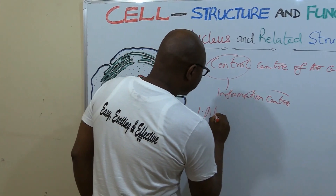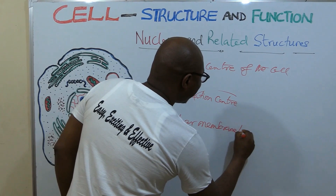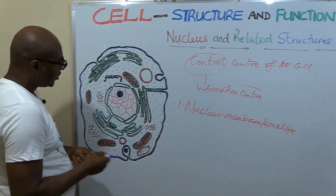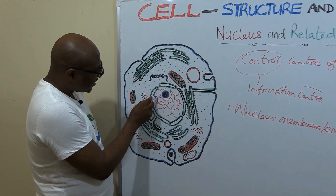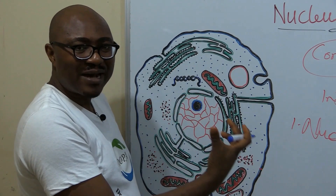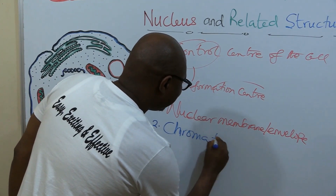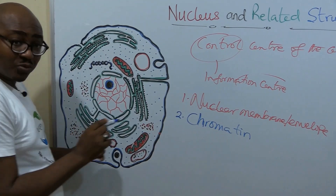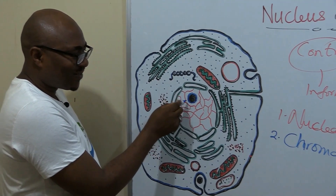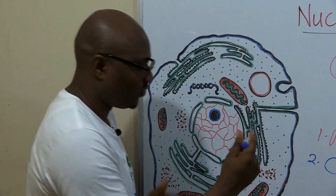Within the nucleus you can see strands — red strands — called chromatin. I'm going to talk about those individually. There's also another structure here, a smaller structure that doesn't have a membrane. It's called the nucleolus.